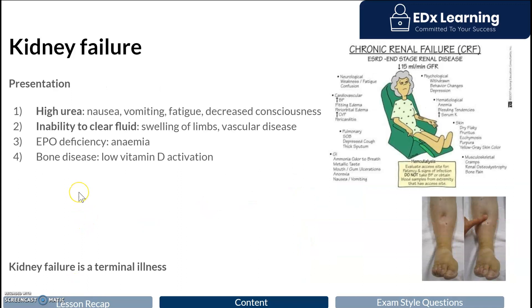We're now going to look at the presentation of kidney failure — what does a person look like when they have failing kidneys? The main job of the kidneys is to remove toxins and excess electrolytes and water from the circulation. The main waste product in the circulatory system is urea. In kidney failure, we see the build-up of urea, which can be seen with a yellowish tinge in this person.